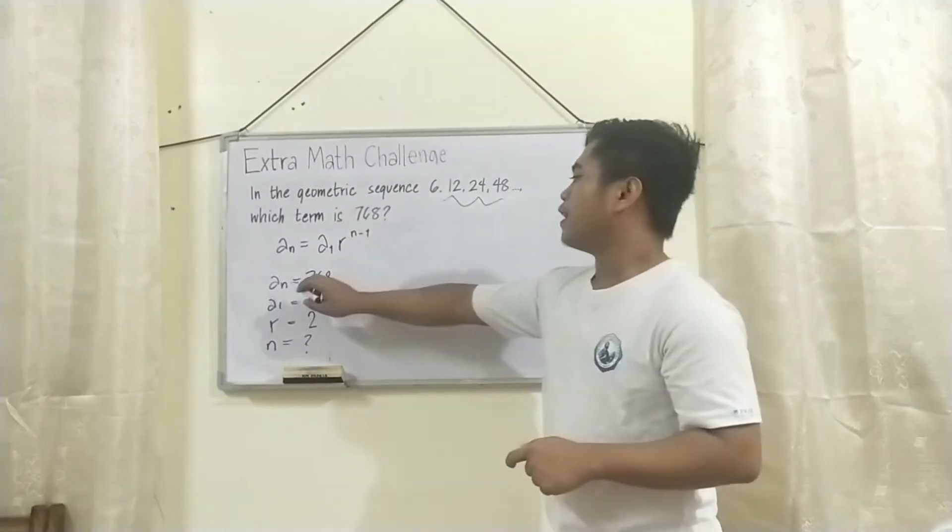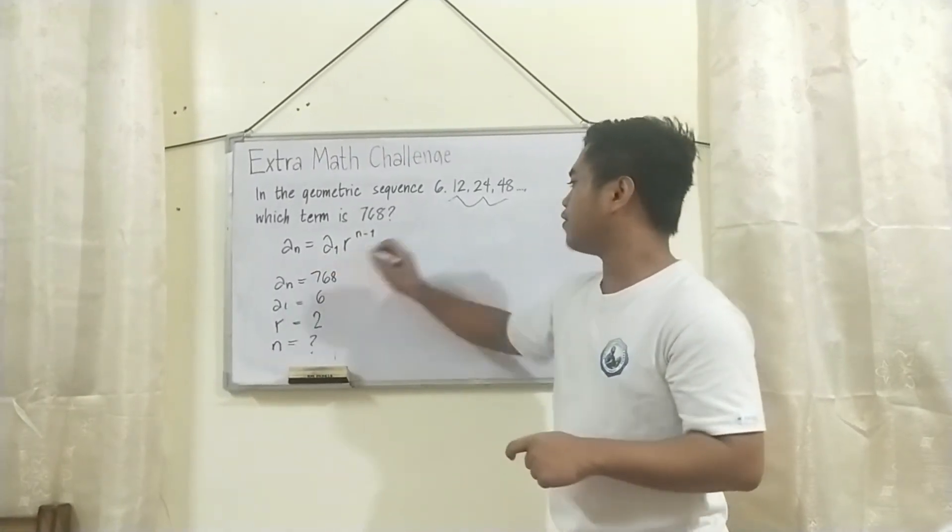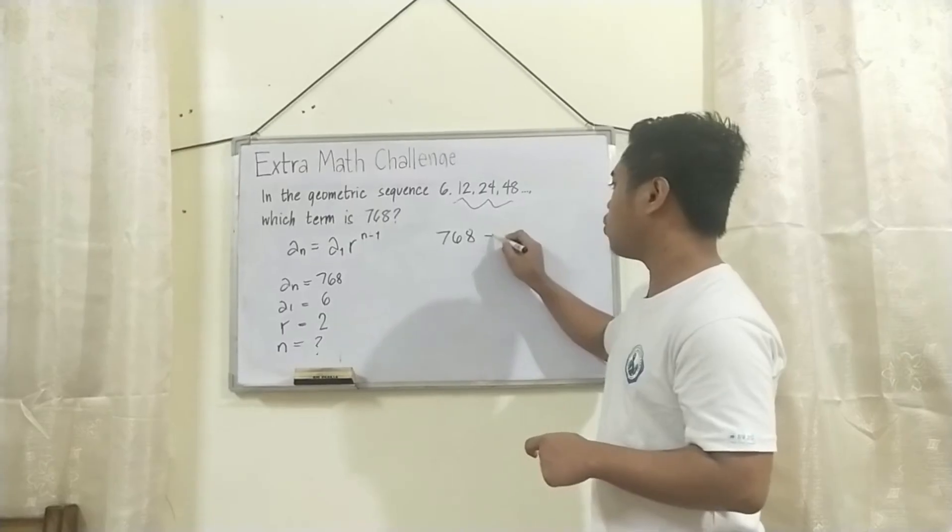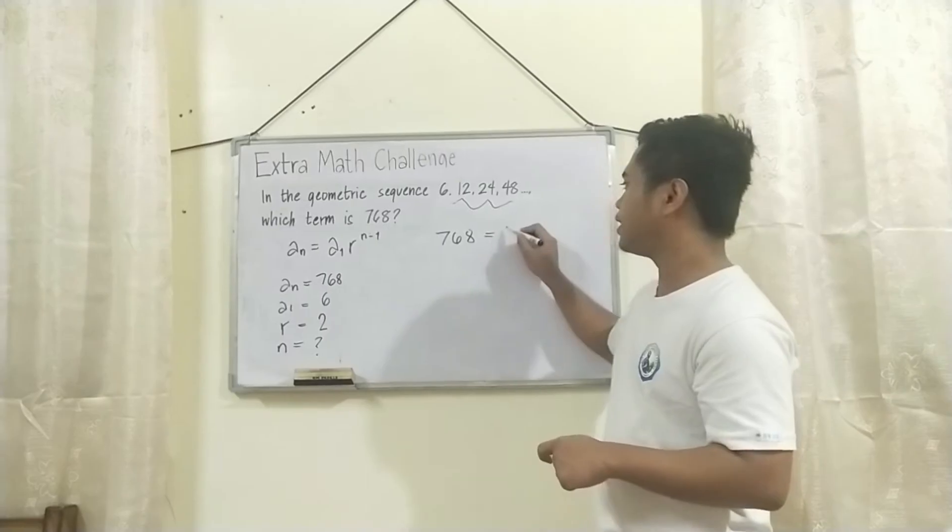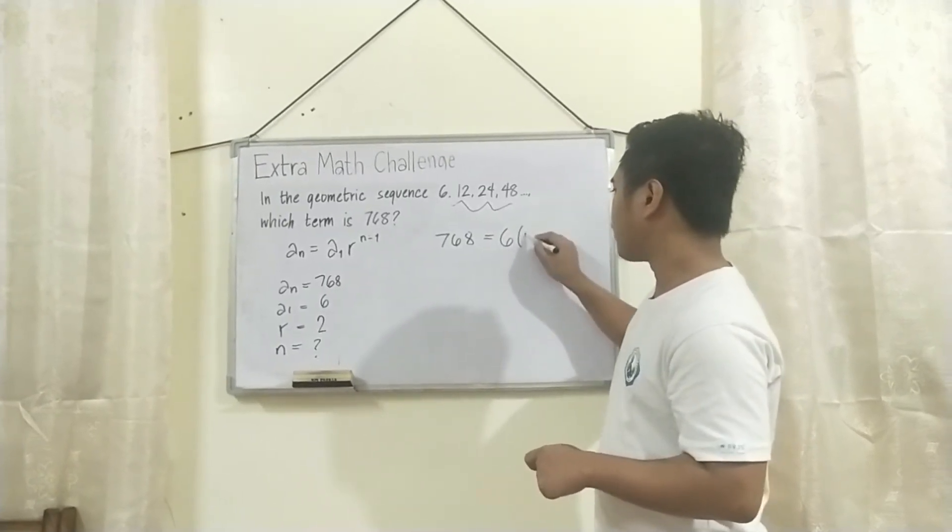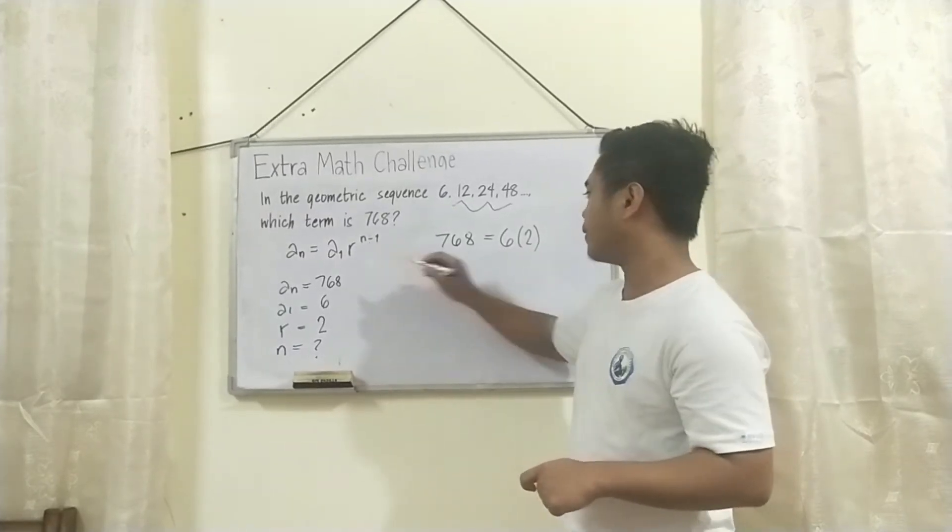Let's substitute na. Yung a sub n natin is 768. So, we'll write 768 is equal to a sub 1 is 6. And the common ratio is 2, raised to n minus 1.